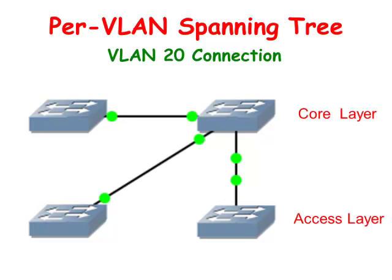A logical topology of VLAN 20 is the reverse mirror image of the one we just saw. It works exactly the same way except instead of using the left core switch, it will use the right core switch. Since the network devices that use VLAN 10 use the left switch and the network devices that use VLAN 20 use the right switch, the network traffic is load balanced between the links.